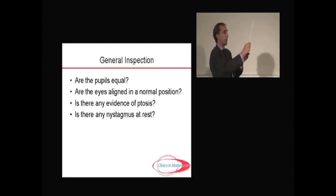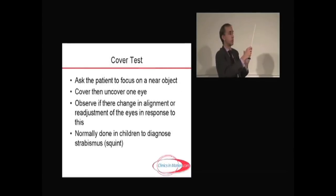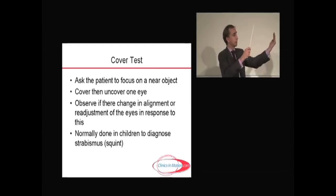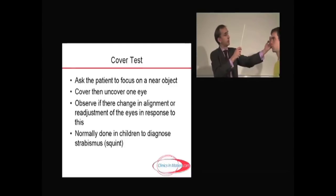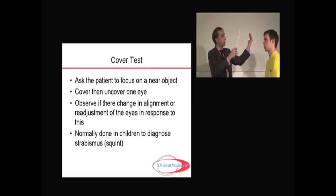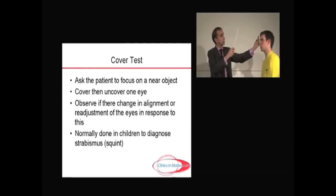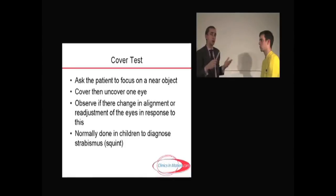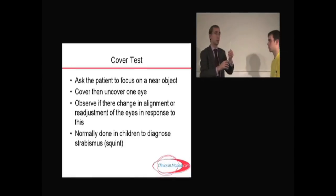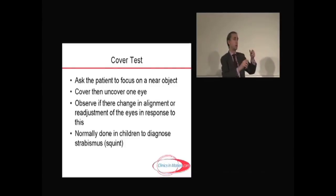The ophthalmologist will perform a cover test if there seems to be inequality — simply asking the patient to focus on the stick and observing whether the alignment of the eyes changes when one eye is covered. This is usually done in children looking for strabismus or squint. From the adult neurological perspective, we're looking at eye movements determined by nerves three, four, and six. There are different ways to do eye movements, and I do them a specific way — I'll show you why.